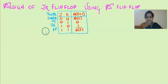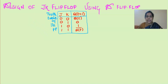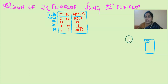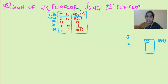Good day students. In this video we are going to see how to design a JK flip-flop using D flip-flop. We are having a D flip-flop in hand, but we want to implement the functionality of a JK flip-flop. I will be giving J and K as inputs and I want to get Q as the output of JK. So I want to implement this particular truth table using D flip-flop.